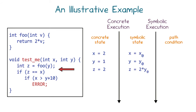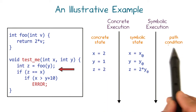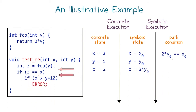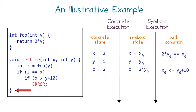At the branch condition z equals x, the condition is now true, so the path condition becomes '2 times y0 equals x0'. At the next branch point, x has concrete value 2 and y plus 10 has concrete value 11, so we take the false branch and add the symbolic constraint 'x0 less than or equal to y0 plus 10' to the path condition — the negation of the branch condition found to be false.